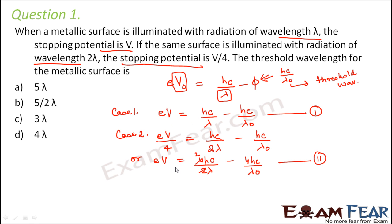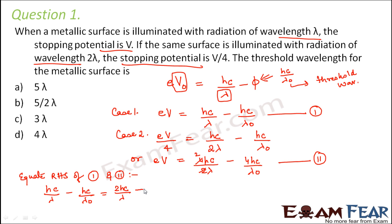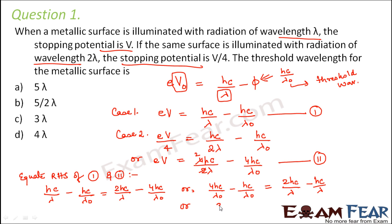Since both equations have the same left-hand side (eV), we equate the right-hand sides: HC/λ − HC/λ₀ = 2HC/λ − 4HC/λ₀. Rearranging, bringing λ₀ terms to one side and λ terms to the other: 4HC/λ₀ − HC/λ₀ = 2HC/λ − HC/λ, which gives 3HC/λ₀ = HC/λ.